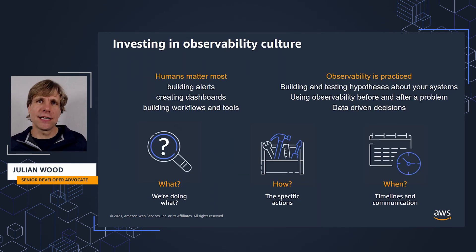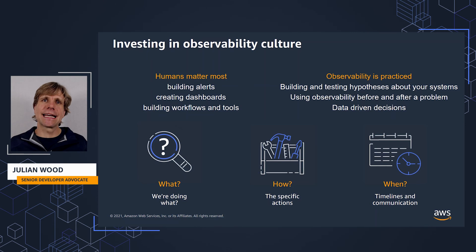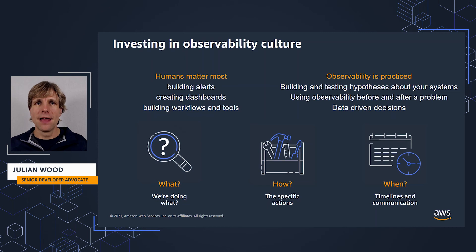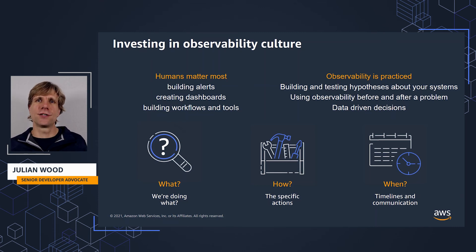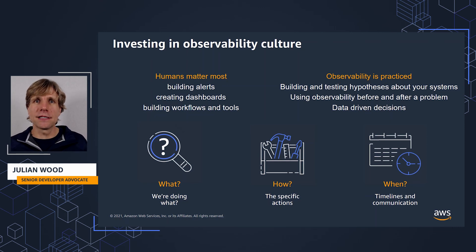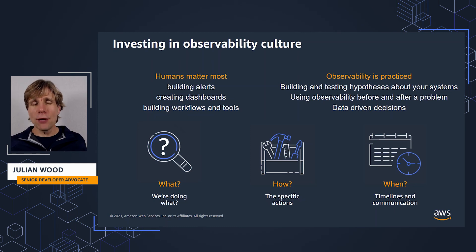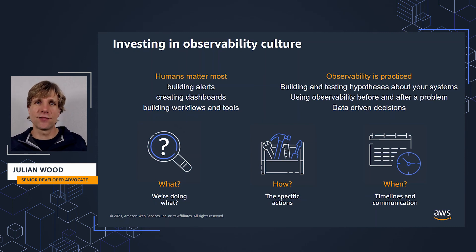Observability is more about your organizational culture and practices than it is just about your tooling. A lot of observability is getting the culture right — how your business thinks about performance, failures, and collecting data. Humans are at the center of it. You need people to build the alerts, create the dashboards, choose the tools, and define the troubleshooting workflows. Tools are important, but the people and process is a big part of observability. It needs to be continually practiced and refined, and the scope of observability is much more than just incident management — it's about creating a culture to make data-driven decisions.